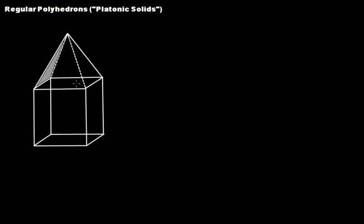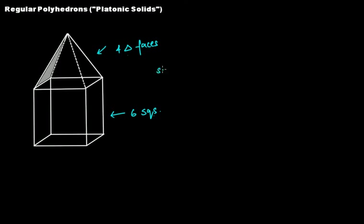What about this one? Imagine this is a cube and on top of it you have constructed a pyramid with a square base. You have six squares on the cube but on top you have four triangular faces. Squares and triangles cannot be congruent — they cannot be equal in size and shape, and both size and shape are important. So this is again an irregular polyhedron.